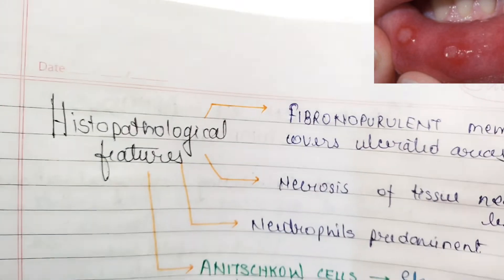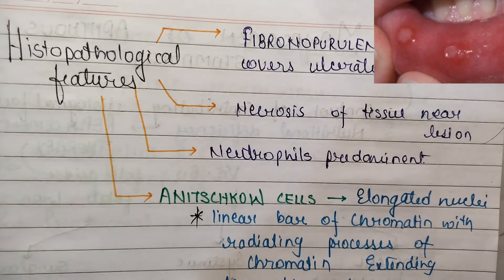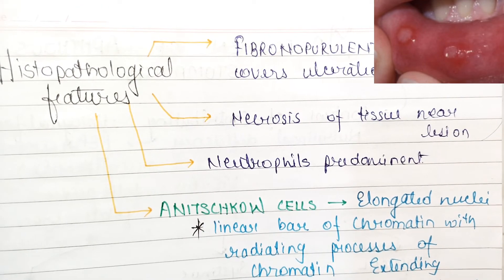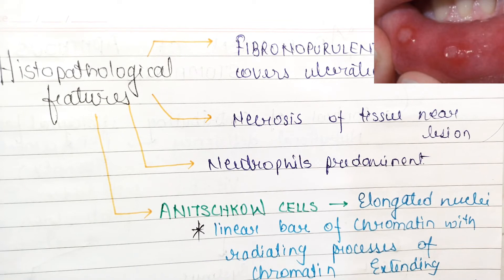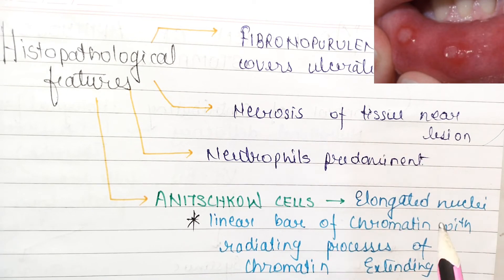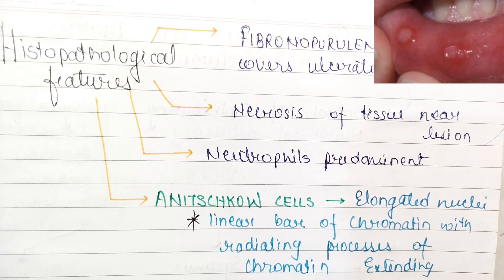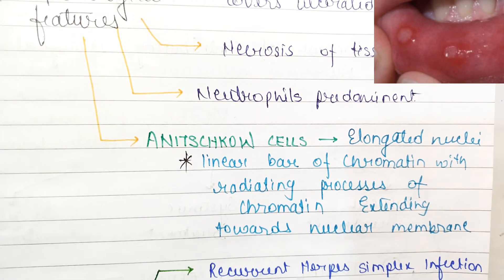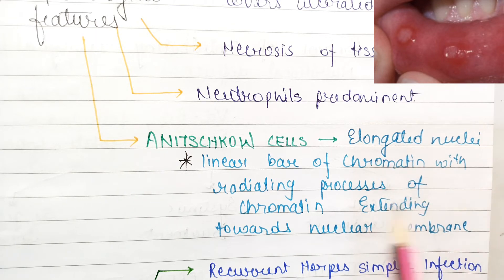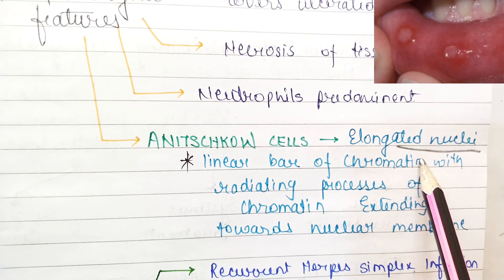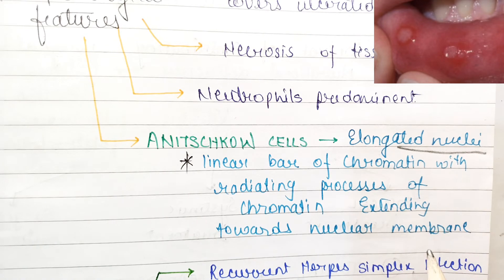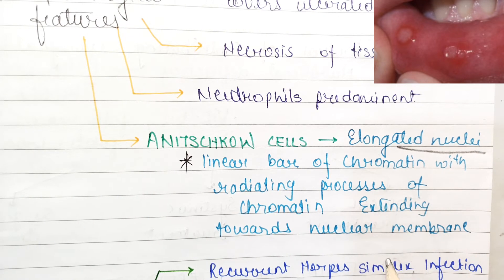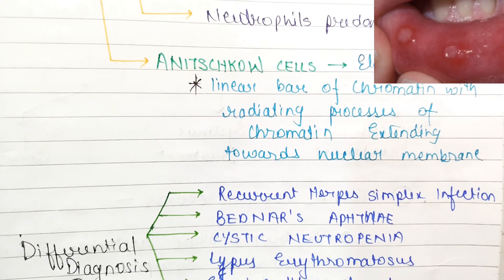Coming to histological features. You can find a fibrinopurulent membrane covering ulcerated area, necrosis of tissue near the lesion, and neutrophils predominant. The very important thing to remember in histological features is Ansel's cells. These cells have elongated nuclei with linear bar of chromatin, radiating processes of chromatin extending towards nuclear membrane. The chromatin is linear based with radiating processes extending towards the nuclear membrane.